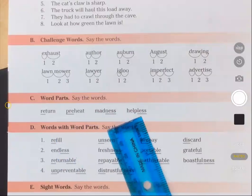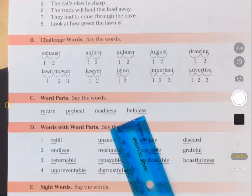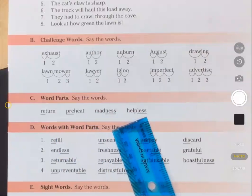The underlined letters are l-e-s-s. The sound is less. The word is helpless. Good.